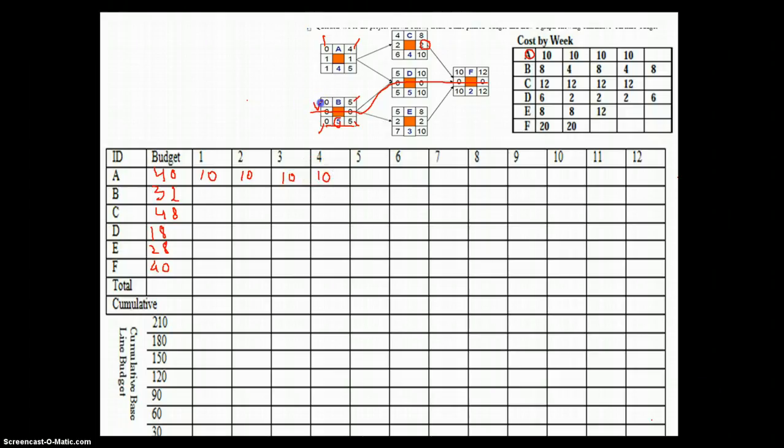You can see the activity B is also the very starting activity. It doesn't depend on any other activity. It has a duration of five weeks. And the budgetary allocation is 8, 4, 8, 4, 8 for the five weeks. So we just put in 8, 4, 8, 4, 8.